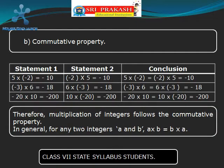Now let us check whether the Commutative Property holds good for integers under multiplication. Let us take two integers 5 and minus 2 and multiply them. That means 5 into minus 2: the product will be minus 10. Now let us take the same integers but change their sequence: first we take minus 2 and then 5. So minus 2 into 5: the product will also be minus 10.